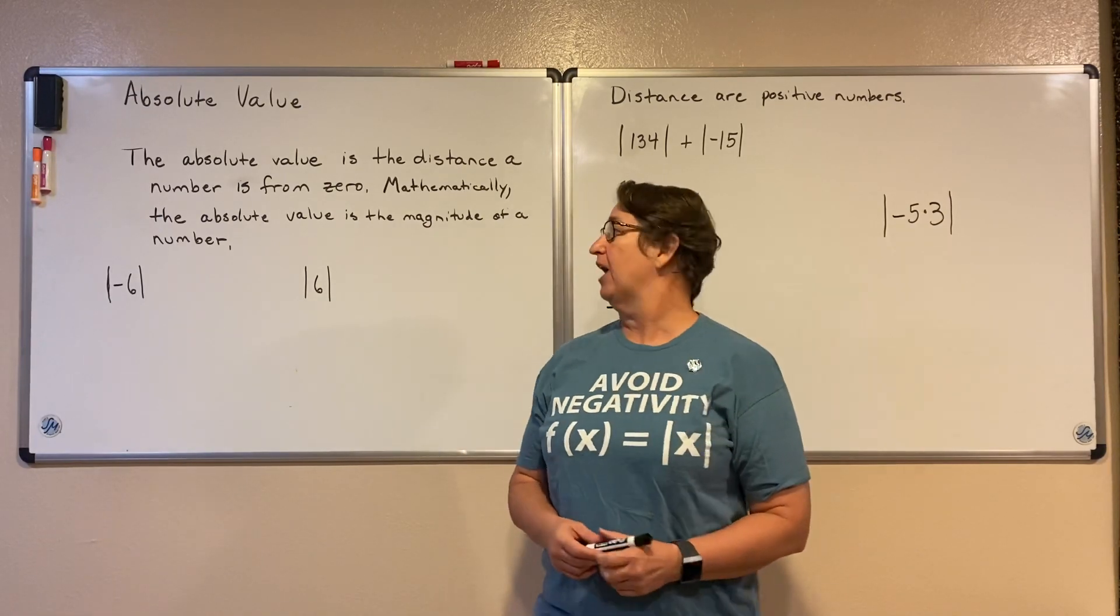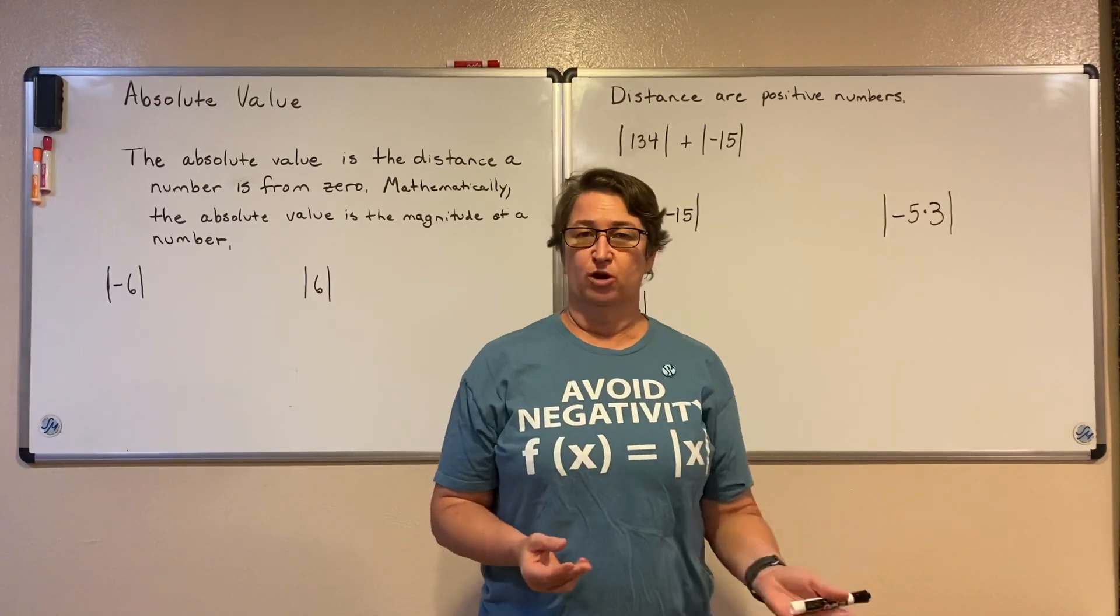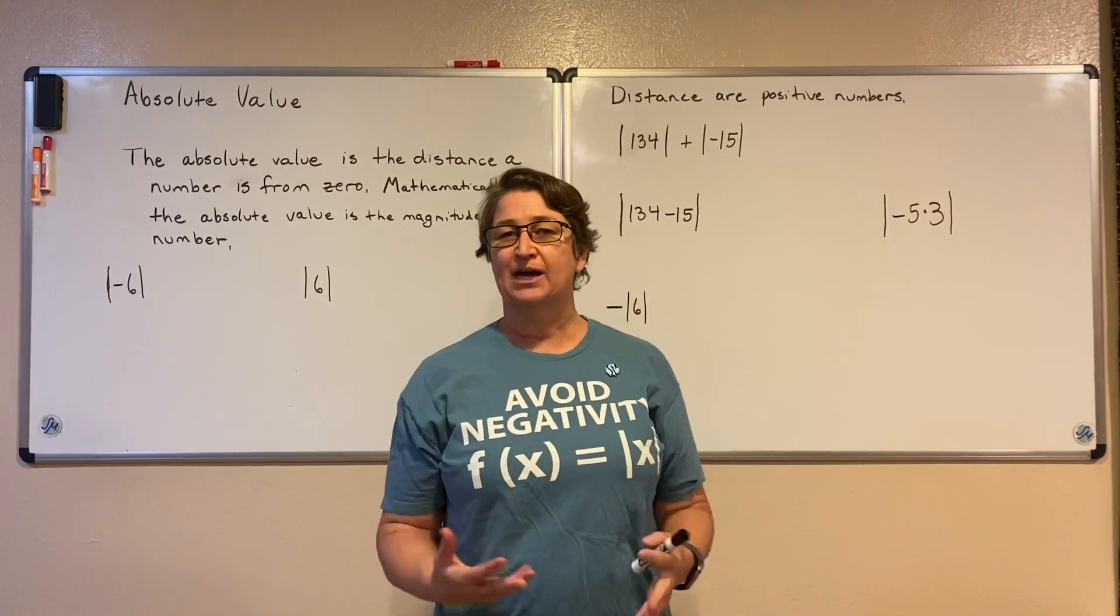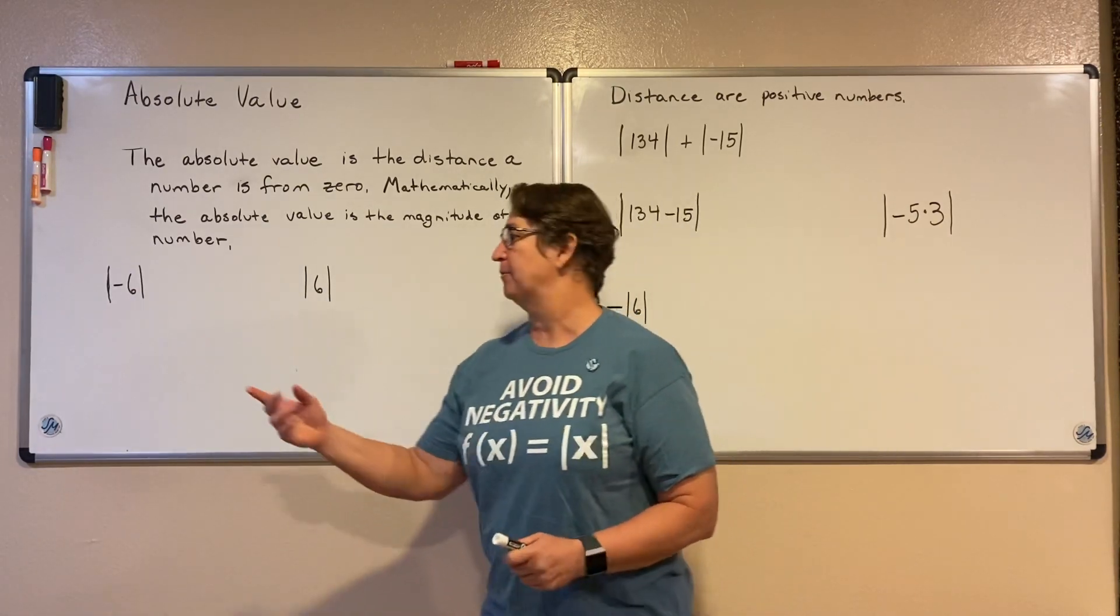The absolute value of a number is just the distance from that number to zero, or mathematically we say it's the magnitude of that number. But let me show you what I mean.